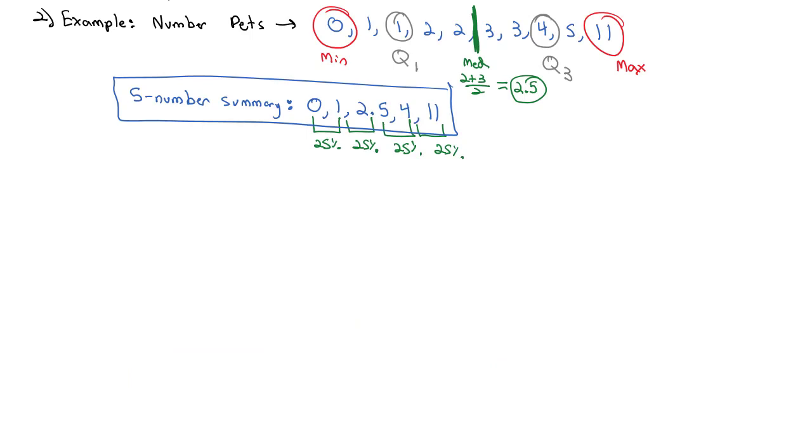Now, for the example that we did together here, we just could kind of look and visually see where the middle was because there were so few numbers in the data set. But if there is a larger data set, let's say with 3,452 elements in it or something, we wouldn't want to go through and count to find the middle and the quartile 1 and quartile 3. Instead, what we can do is use the locator method.